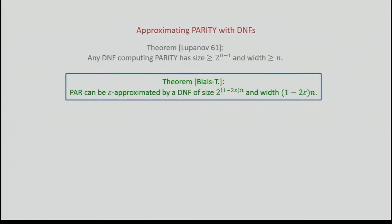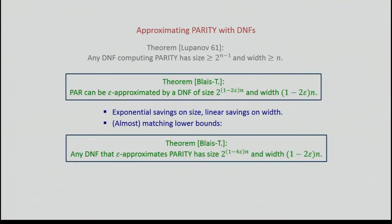Our first theorem is an analog of Lupaov's theorem. For every epsilon, parity can be epsilon-approximated by a DNF of size 2^((1 - 2ε)N) and width (1 - 2ε)N. For constant epsilon, this is exponential savings on size and linear savings on width. We complement these upper bounds with almost matching lower bounds: any DNF that epsilon-approximates parity requires size at least 2^((1 - 4ε)N) and width at least (1 - 2ε)N. Our bounds on width match exactly, and our bounds on size nearly match, modulo a factor of 2 versus 4 in the exponent.